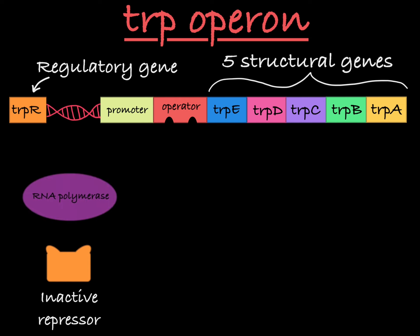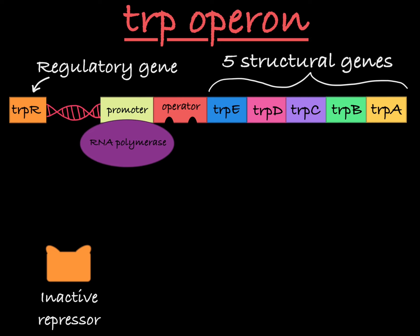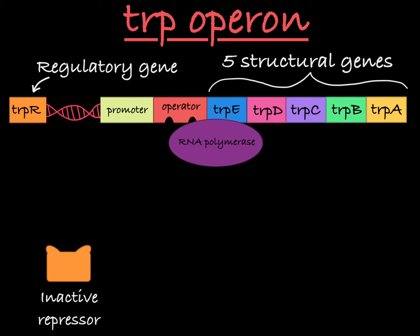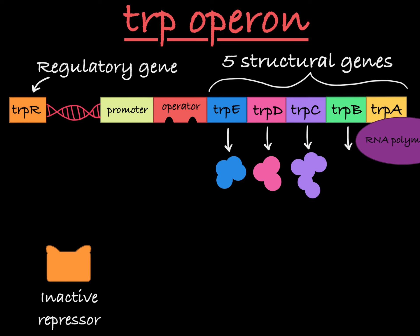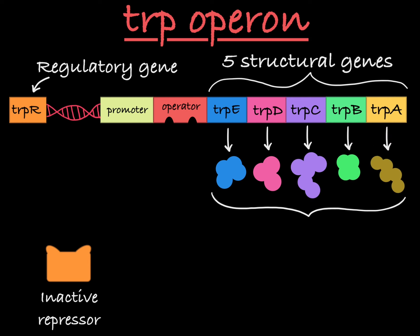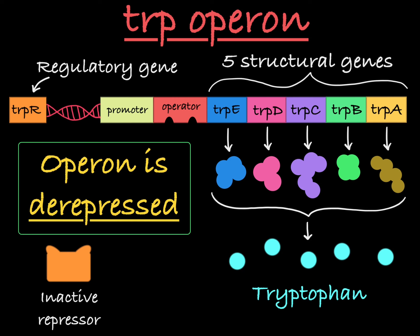In this situation, RNA polymerase can freely bind to the promoter and transcribe the structural genes, leading to the production of enzymes that help make tryptophan. In this state, the operon is said to be de-repressed, meaning the structural genes are expressed.